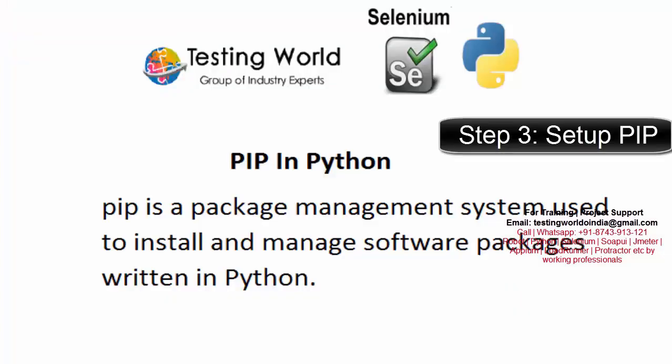Now I'm going to tell you what pip is in Python. After installing Python we need different libraries to perform different tasks. For example, if you want to work on Excel sheets you need the library openpyxl, and if you want to work with JSON you need json and jsonpath libraries. In Python we don't call them libraries, we call them packages. Pip is a package management system which is used to install and manage software packages written in Python.